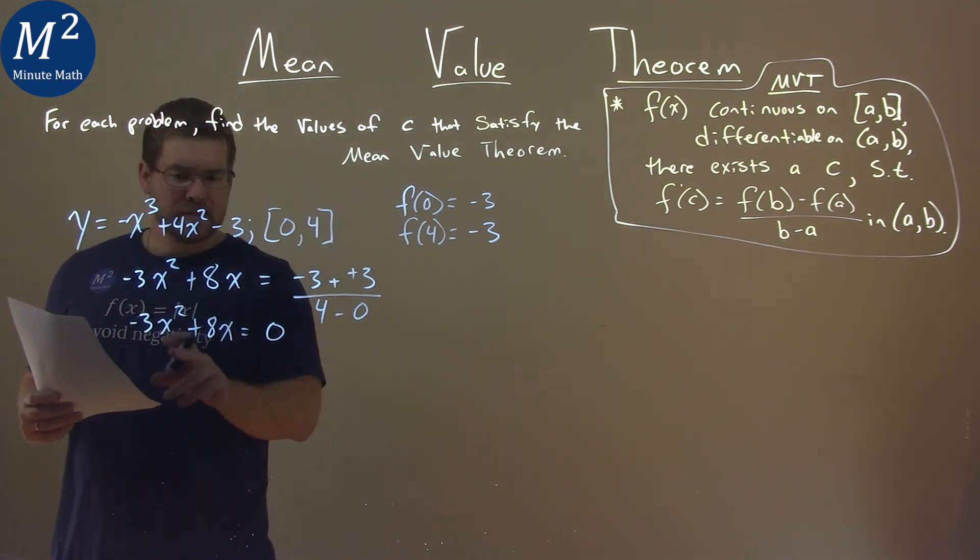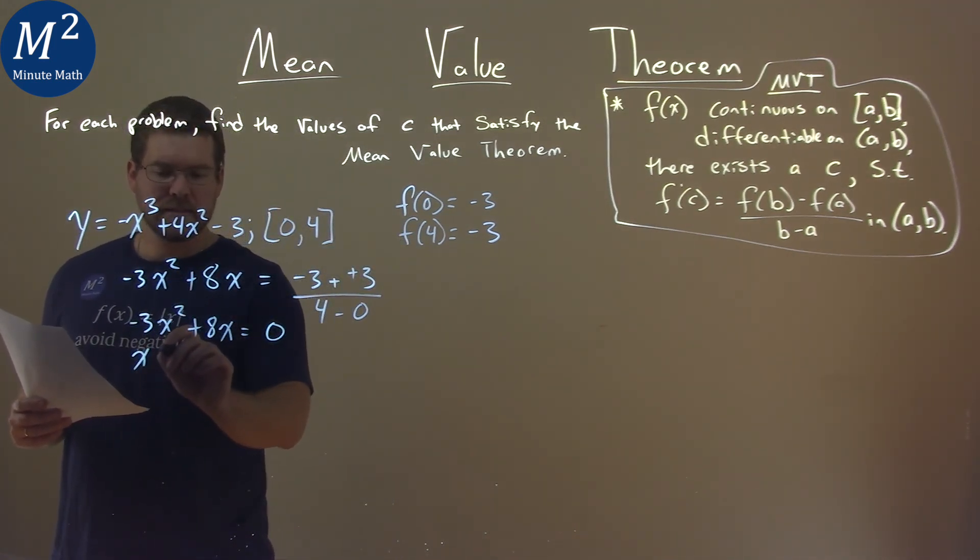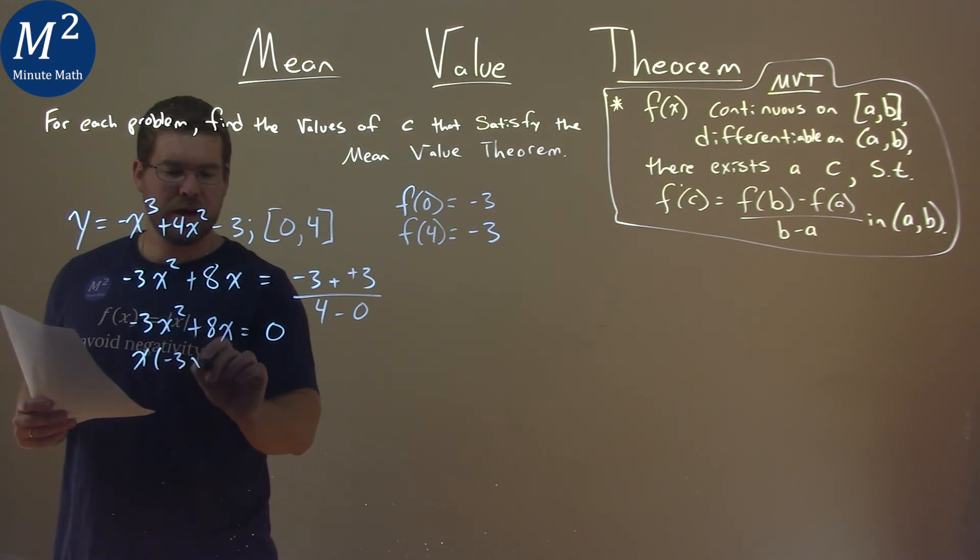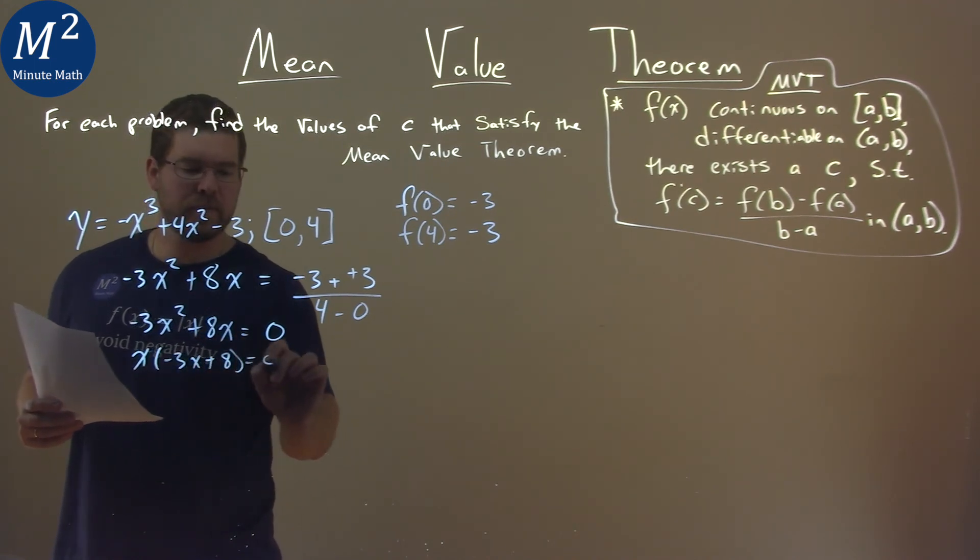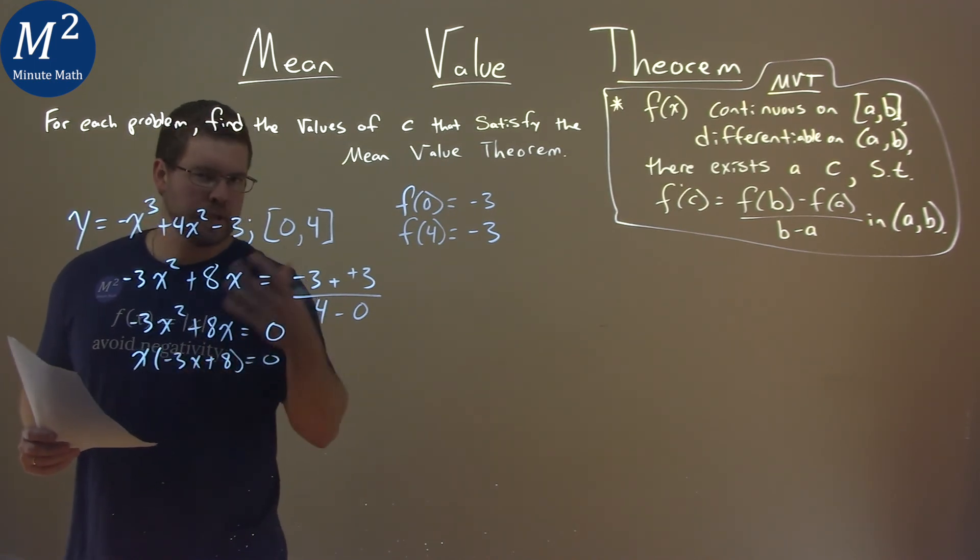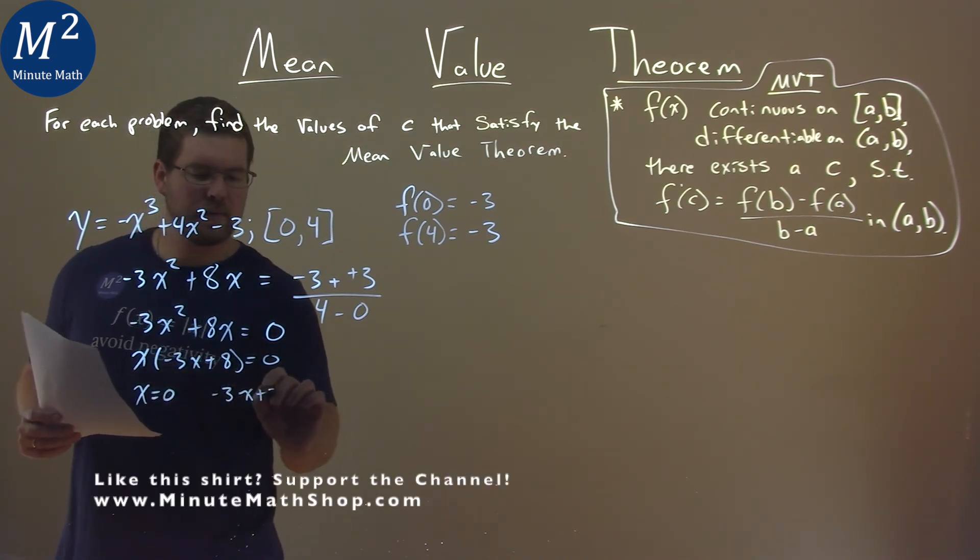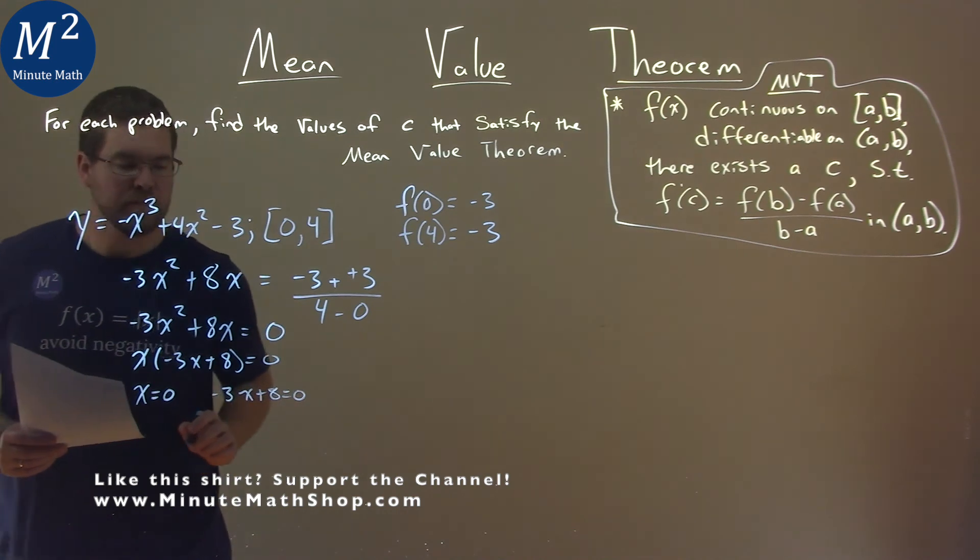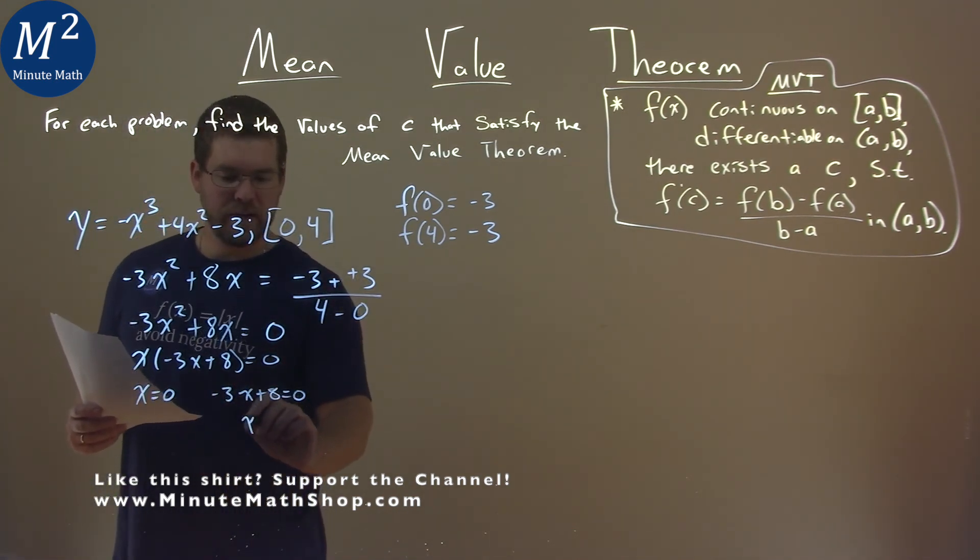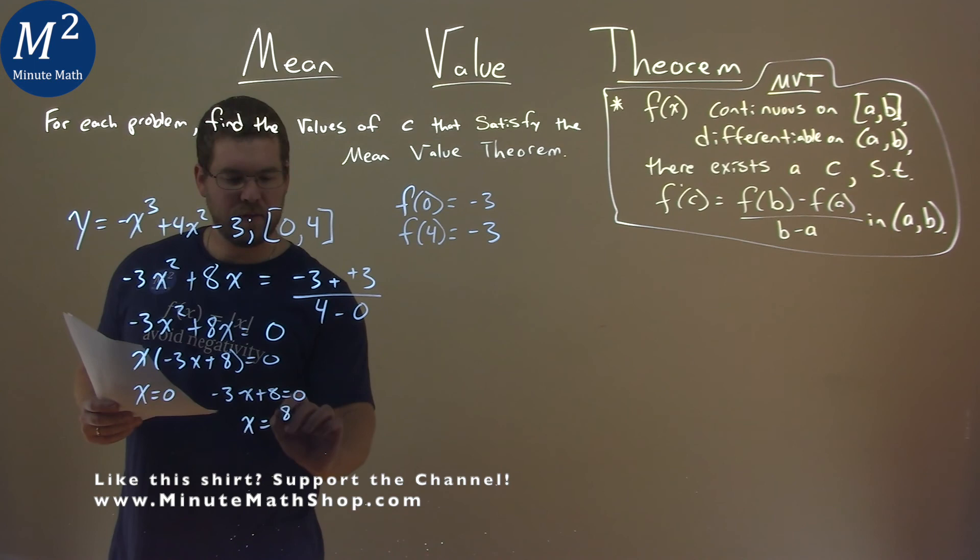Now we want to solve for x, so if you pull out an x here, we have x(-3x + 8) = 0. Set each one individually equal to 0: x = 0, and -3x + 8 = 0. Subtract 8 from both sides, divide by -3, and x = 8/3.